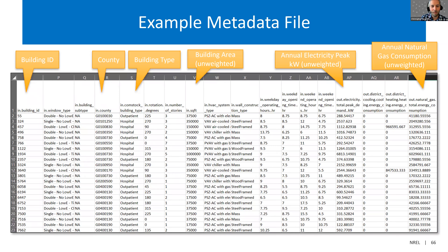This shows an example metadata file — the file that has all the building characteristics and the annual results. Some columns like 'in.square_footage' are unweighted, so you would want to apply the weighting factor if trying to represent results at the national scale. The same applies to peak KWh and annual natural gas consumption. This is also an example of a time series file showing building ID, time stamps, and consumption values.